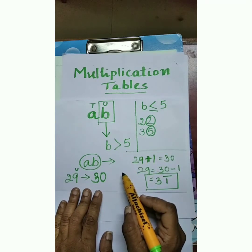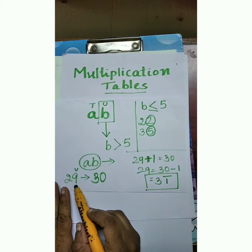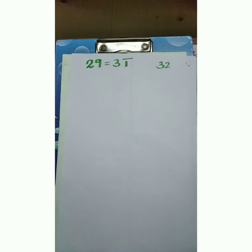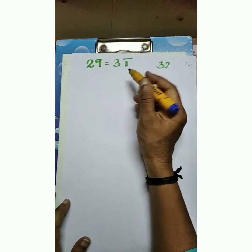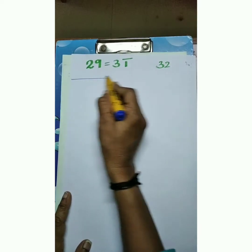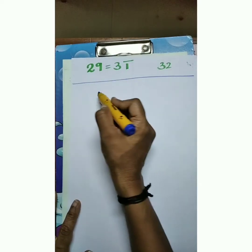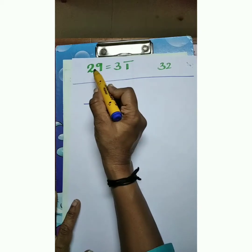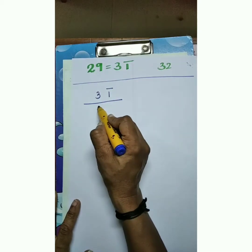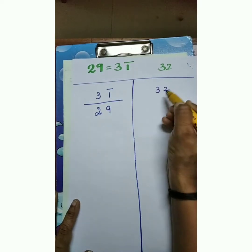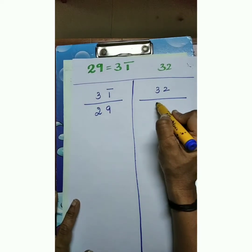Now let us take the number 29 and see how to write the tables. 29 equals 3 bar 1 — that is its vinculum form. Draw one line and write the given number 29. Similarly on this side, write 32, draw one line, and below write 32. Here we are not converting 32.